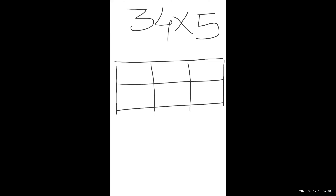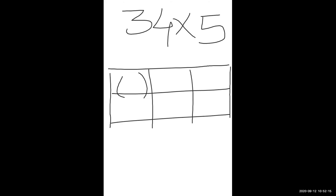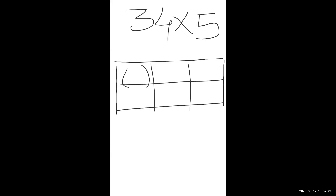In the first box, which sign will come? Because we are doing multiplication, the multiplication sign will come. Next, how to write 34 in the two boxes: in the first column write 30 and in the third column write 4. Now write 5 on the downside of the multiplication sign.